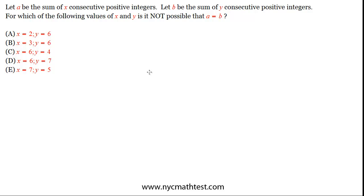So we have two separate sums of consecutive positive integers. In the first case we have X consecutive integers, and the sum is represented by A. In the second case we have Y consecutive positive integers, and the sum is represented by B. And they want to know for which of the values of X and Y, which is how many consecutive integers, is it not possible that the sums of those sets are the same?